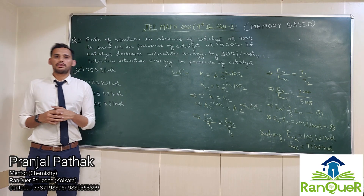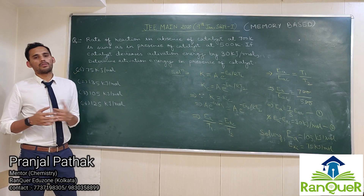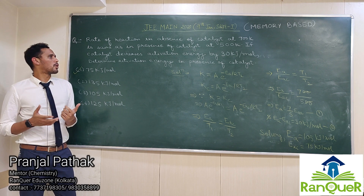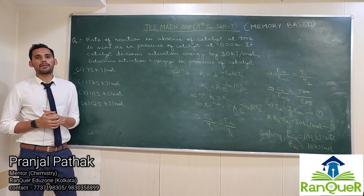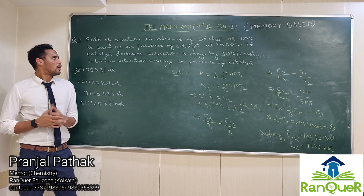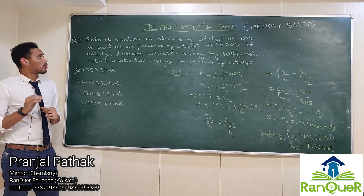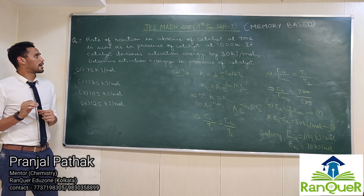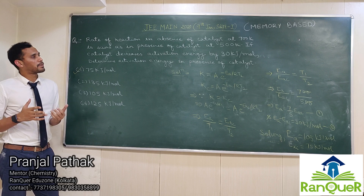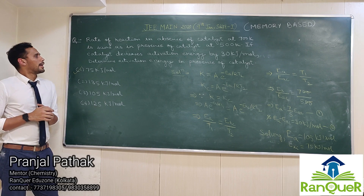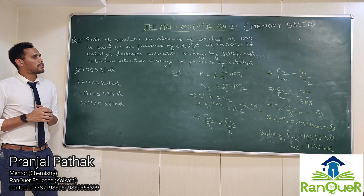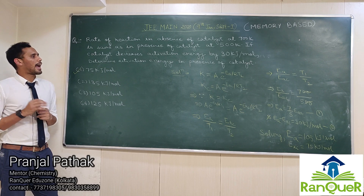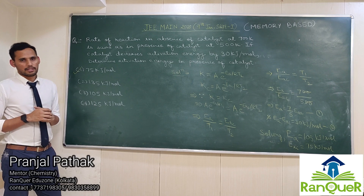Moving on to the next question, which was asked on 9th of January in the shift 1 chemistry question paper. This question is from chemical kinetics, a very important chapter. The question says: the rate of reaction in absence of catalyst at 700 Kelvin is the same as in the presence of catalyst at 500 Kelvin. If the catalyst decreases activation energy by 30 kilojoule per mole, determine the activation energy in presence of catalyst.